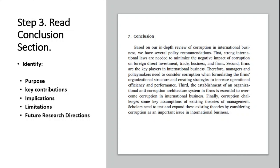The conclusion section consists of the following things. Number one, purpose — they explain what they conducted in the study. They will explain key contributions: what are the key contributions to previous literature? Implications: how you can utilize their findings. Limitations: what are the limitations of the research. And future research directions: how future researchers can enhance the topic and find out different things.